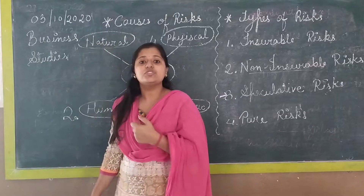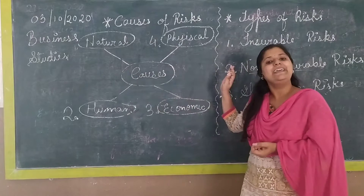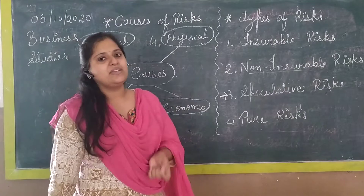As you can see in the diagram, the causes of business risk are four in number: natural causes, physical causes, human causes, and economic causes. These are the four causes of risk for a business, and we are going to study each one in detail.